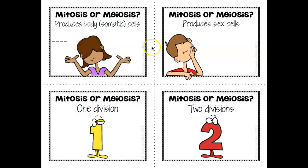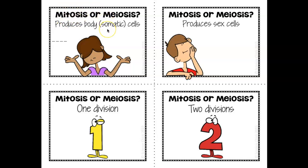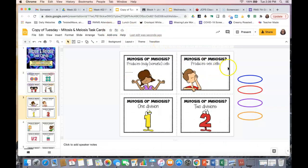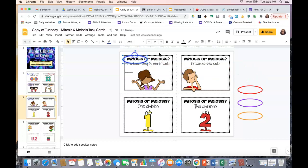Next we have mitosis or meiosis: one produces somatic cells and one produces sex cells. We know that meiosis produces egg and sperm, so those are our sex cells. Somatic cells are the same thing as body cells. Remember: my toe is part of your body, so mitosis is making your body cells. This one is mitosis, and this one is meiosis.